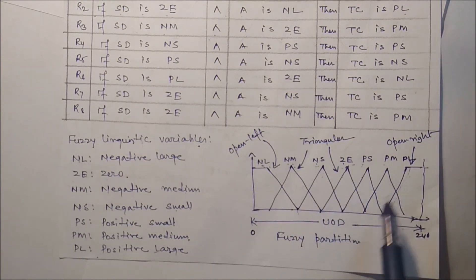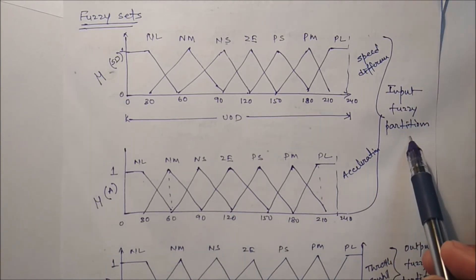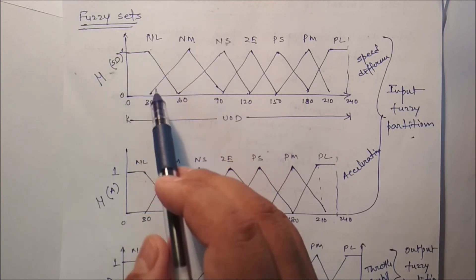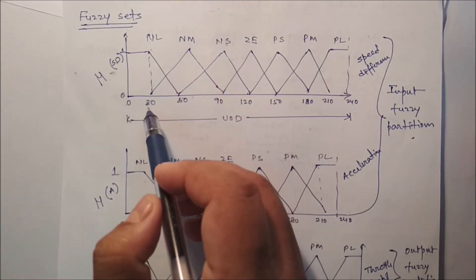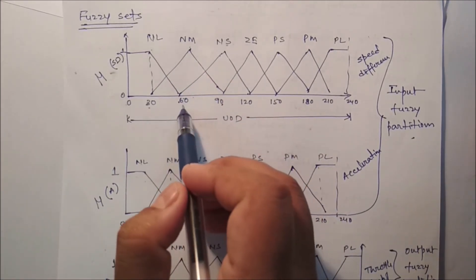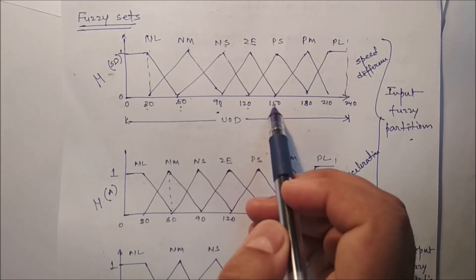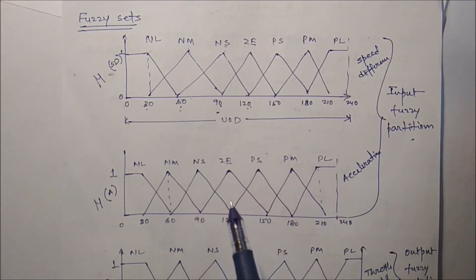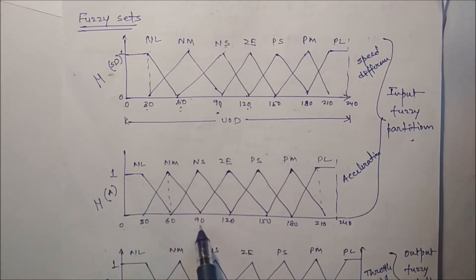Looking at the fuzzy partition for speed difference (universe 0 to 240): NL spans 0 to 60 (membership = 1 up to 30, then decreasing to 0 at 60); NM is active between 30 and 90, maximum at 60; NS is between 60 and 120, maximum at 90; GE is between 90 and 150, maximum at 120 — and so on. The fuzzy partition for acceleration is the same structure, also ranging from 0 to 240, with seven fuzzy partitions defined identically.